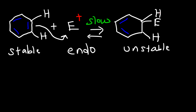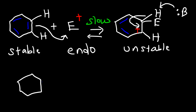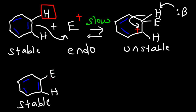The benzene ring no longer has a continuous pi electron cloud — now we have a carbocation intermediate. In the second step, a base is going to come in, take away the hydrogen, and then regenerate the aromatic ring. This second step is fast because we're going from an unstable compound to a stable compound. The net result is that we've replaced a hydrogen atom with an electrophile, so this is called an electrophilic aromatic substitution reaction.